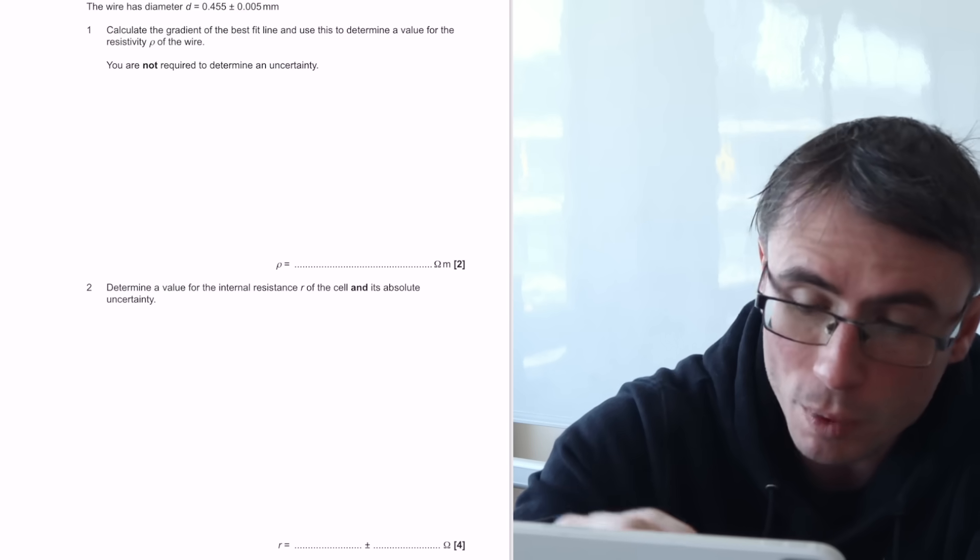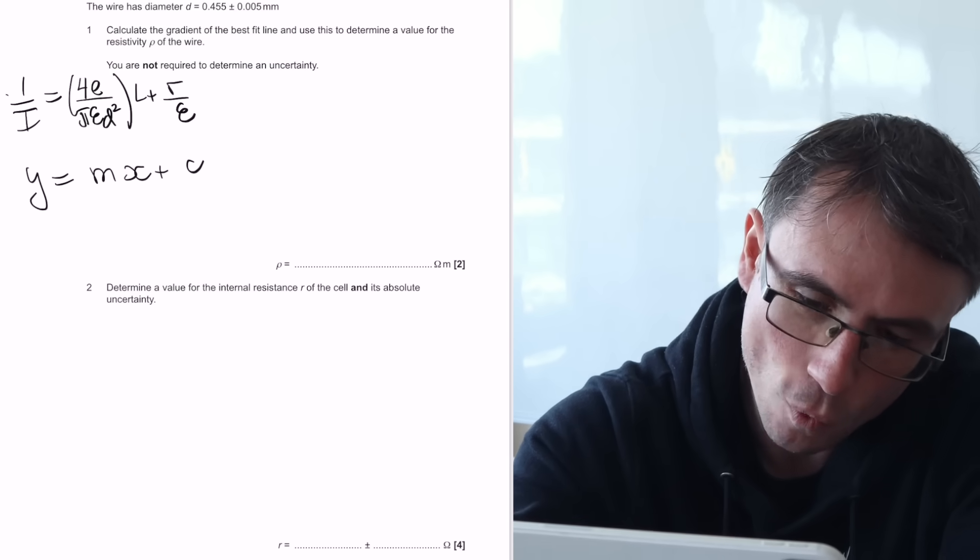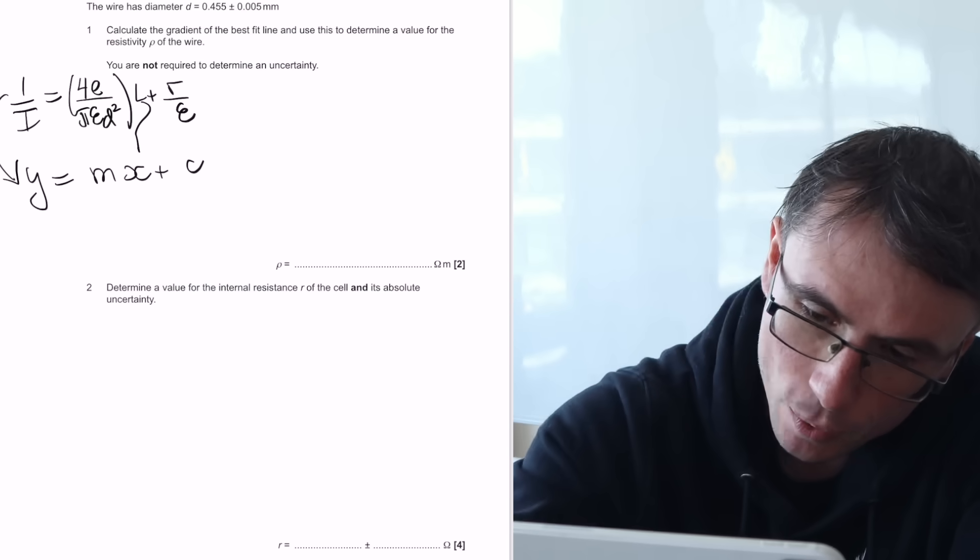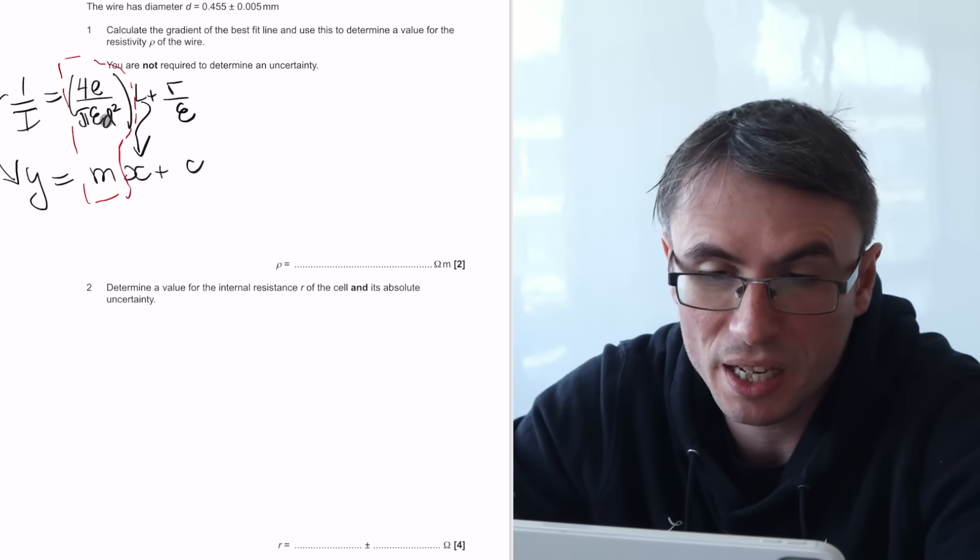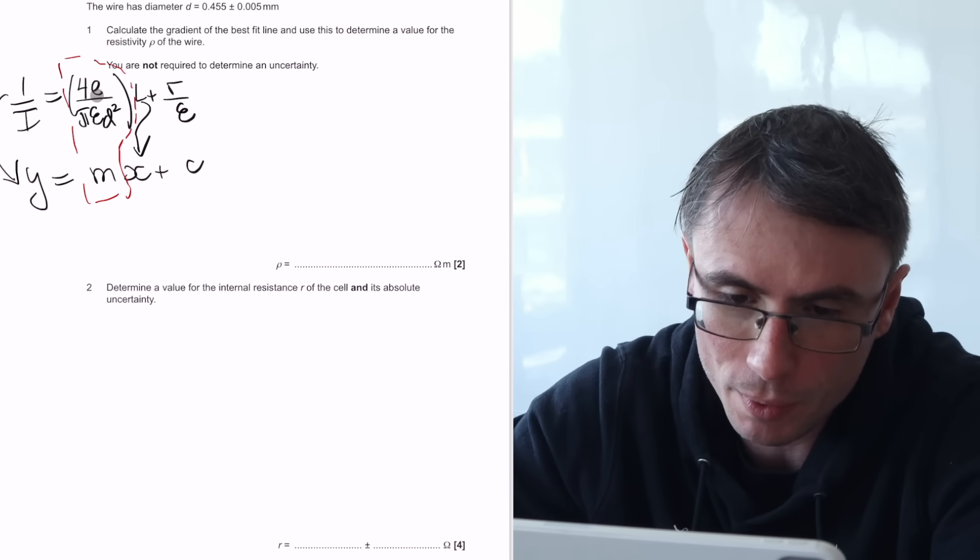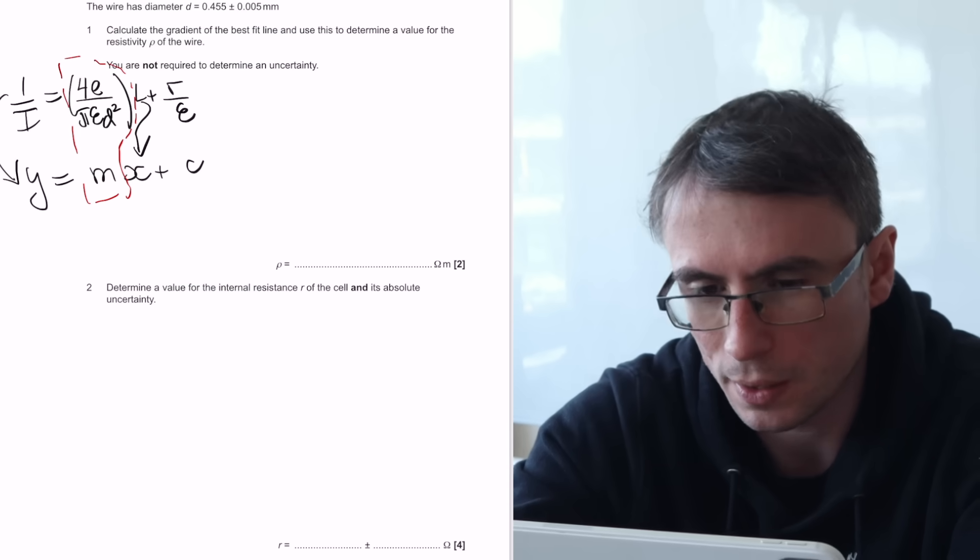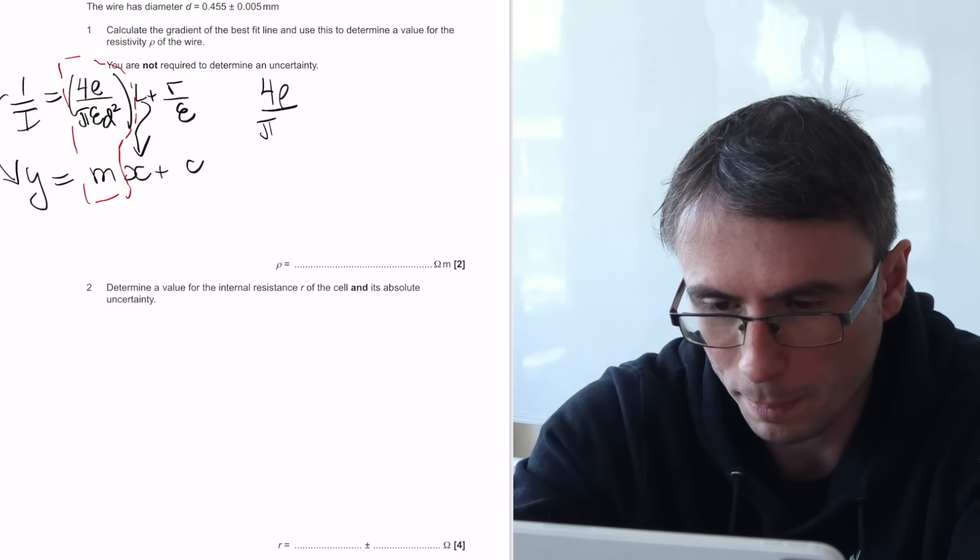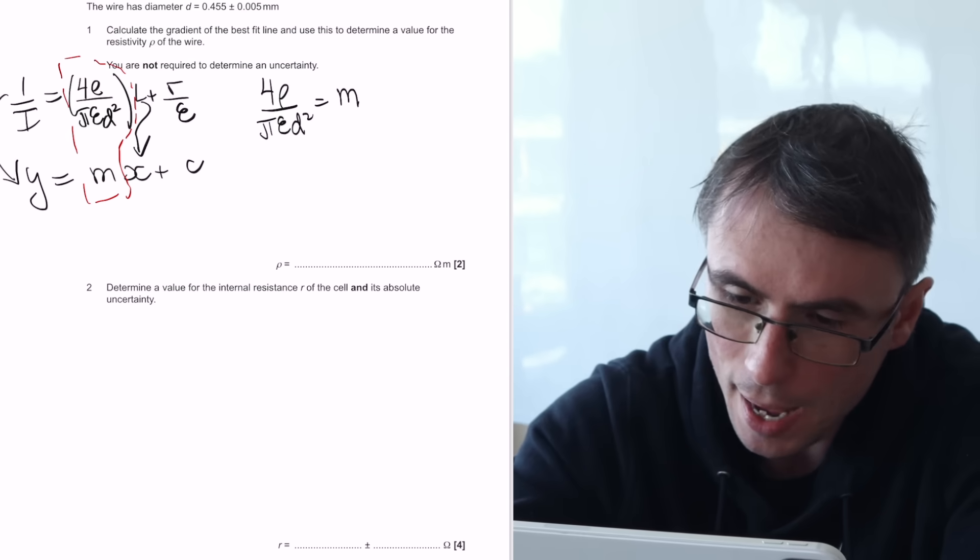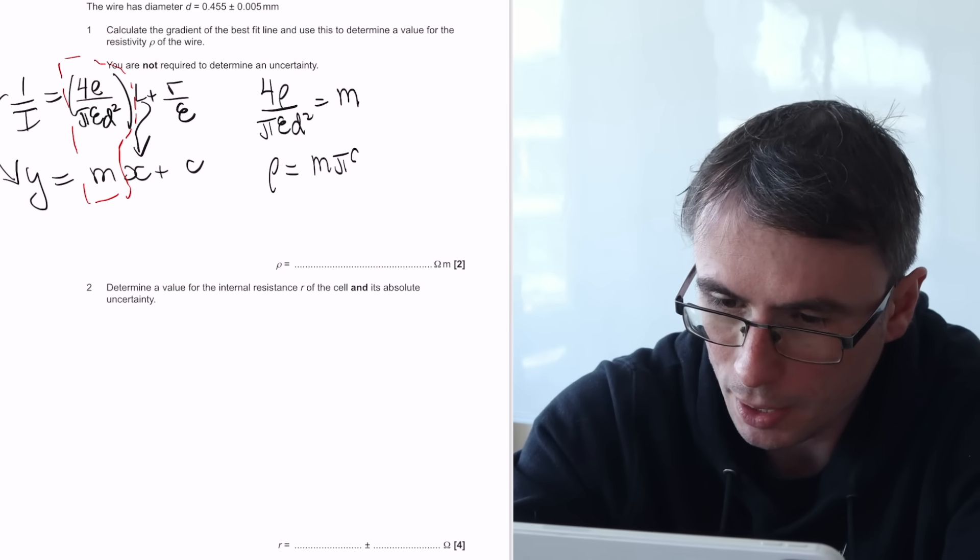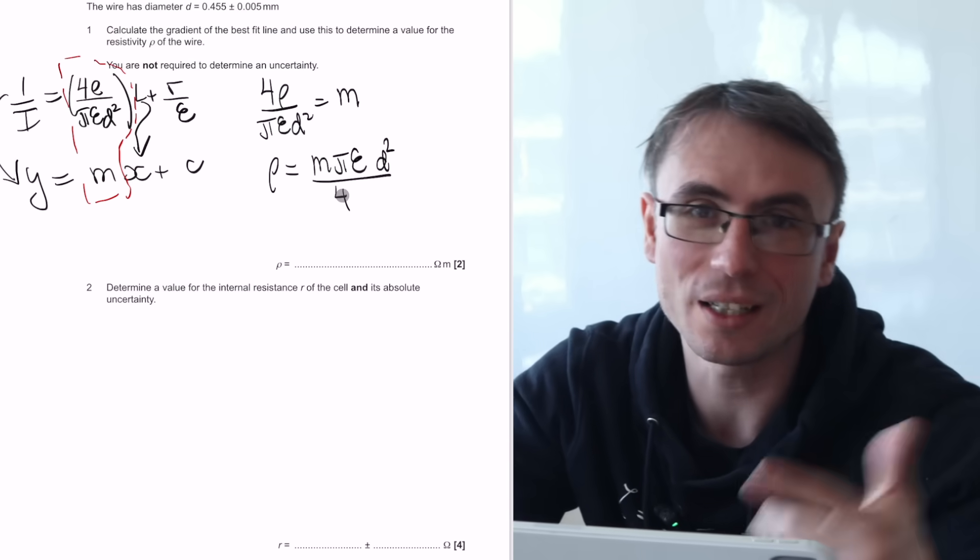The way I tend to do that is just by rewriting the equation. And directly underneath, I would write Y is equal to Mx plus C. And now, if 1 over I is on the Y axis, if L is on the X axis, then our gradient is going to be everything that is multiplying L or whatever is on the X axis. In this case, there's going to be 4 times the resistivity over pi epsilon d squared. So we're just looking for the resistivity of the wire. So we can just rearrange for that. Essentially, we can say that 4 times the resistivity over pi epsilon d squared is equal to the gradient, which we're about to find. And let's just rearrange for the resistivity, which is going to be m pi epsilon d squared divided by 4. To get the resistivity, we will need the gradient.